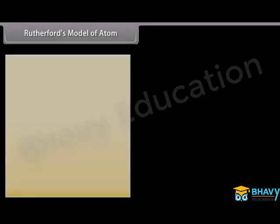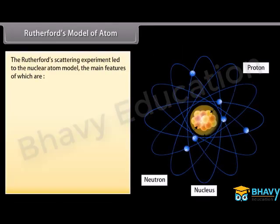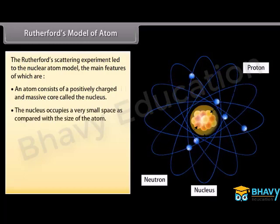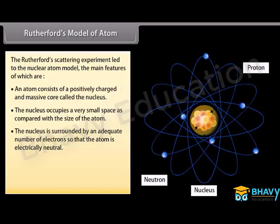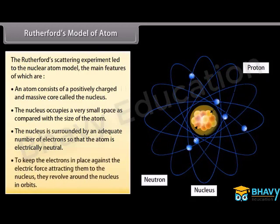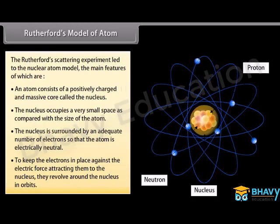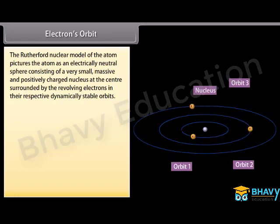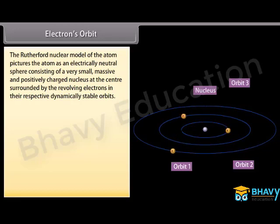Rutherford's model of the atom: The Rutherford scattering experiment led to the nuclear atom model. The main features are: an atom consists of a positively charged and massive core called the nucleus, which occupies a very small space compared with the size of the atom. The nucleus is surrounded by an adequate number of electrons so that the atom is electrically neutral. To keep electrons in place against the electric force, they revolve around the nucleus in orbits. The atom is pictured as an electrically neutral sphere with a small massive nucleus at the center surrounded by revolving electrons in dynamically stable orbits.